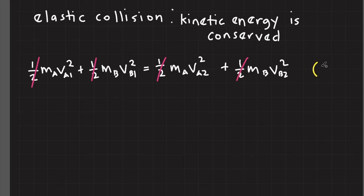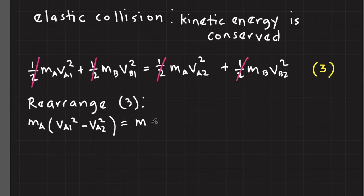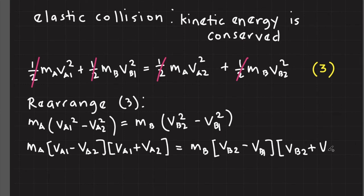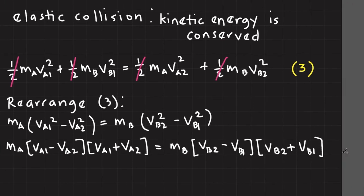Let's call the resulting equation as equation 3. Let's rearrange equation 3 so we can factor out the masses and factor out the square terms. Let's call the resulting equation as equation 4.